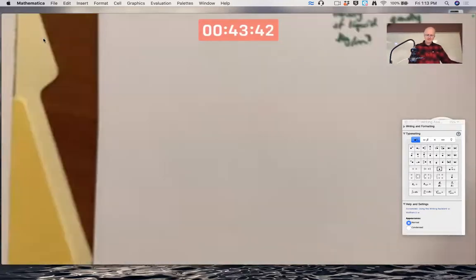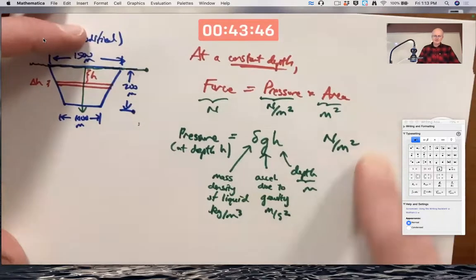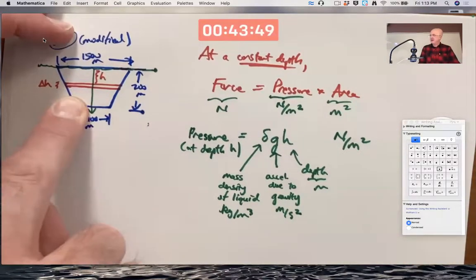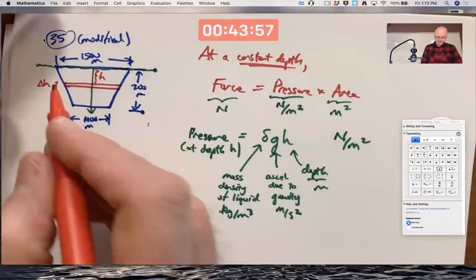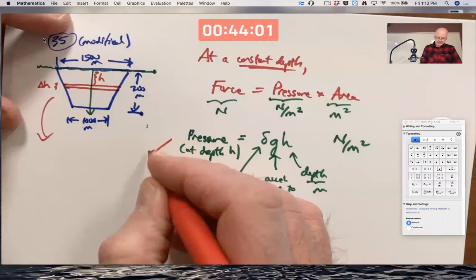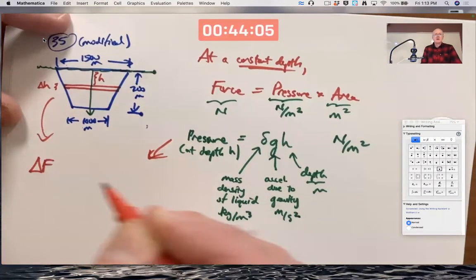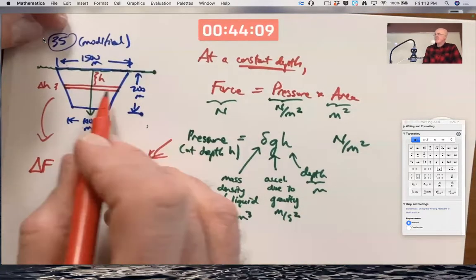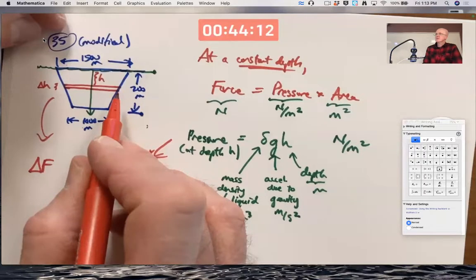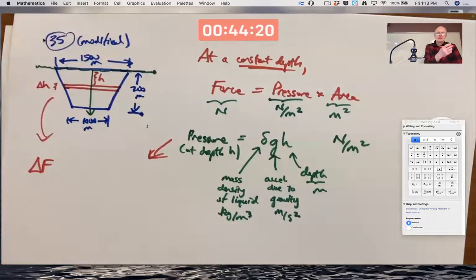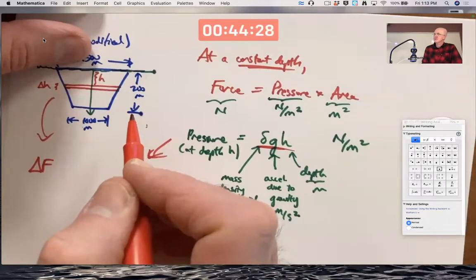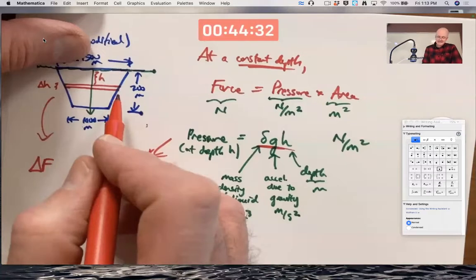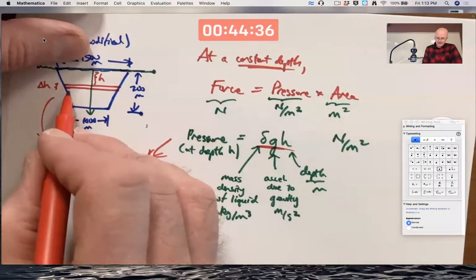Coming back to the problem at hand, this is thinking about constant depth, but now we have variable depth. But along a thin slice, it's approximately constant depth. Delta F on that thin slice of the dam, force caused by the water pressure, is that water pressure delta times G times H times that cross-sectional area. The area of the thin slice, which is cross-sectional length times its width, its height, delta H. Let's call the width W.